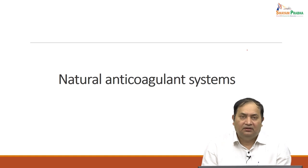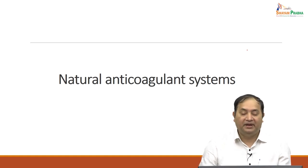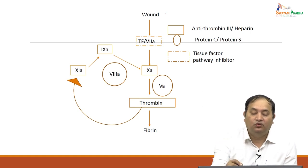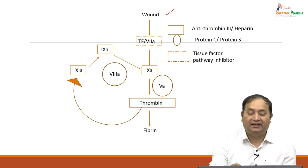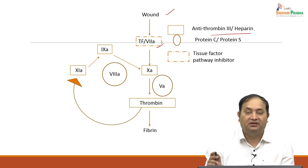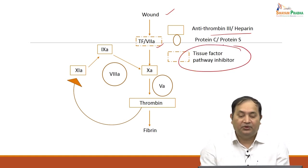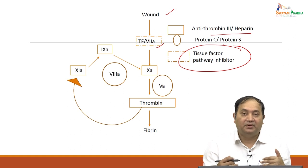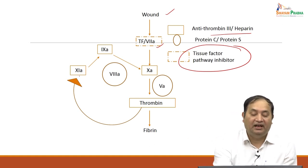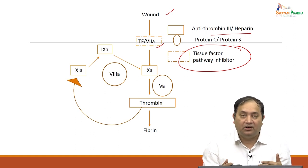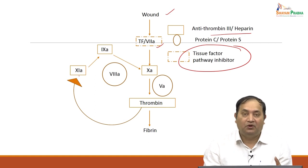Let us understand the natural anticoagulant system. The body has protective power of anticoagulation. Suppose you have any wound and factor 7A gets activated — the factors of antithrombin 3, heparin, protein C, protein S, and tissue factor pathway inhibitors play a role. Factor 7A is converted to 10A with factor 5A, which is ultimately converted to thrombin, and from thrombin to fibrin clot. Factors 9A, 11A, and 8A are responsible for conversion of factor 9A, with help of factor 5A, into thrombin and fibrin clot following any wound or injury.